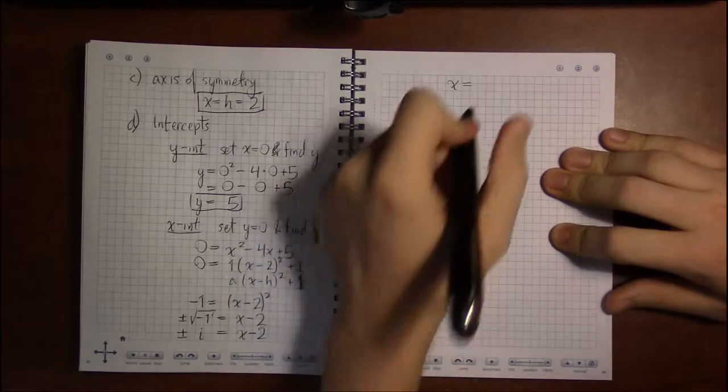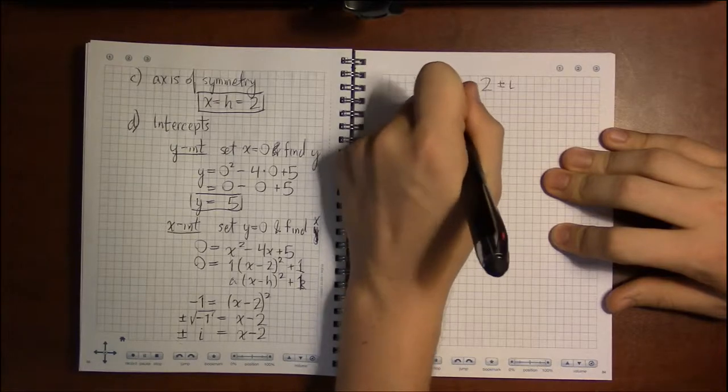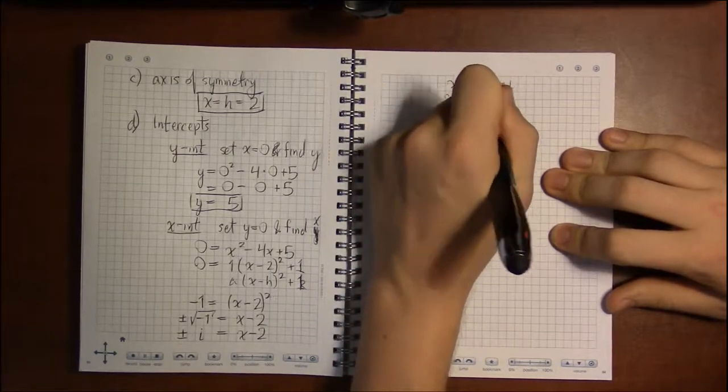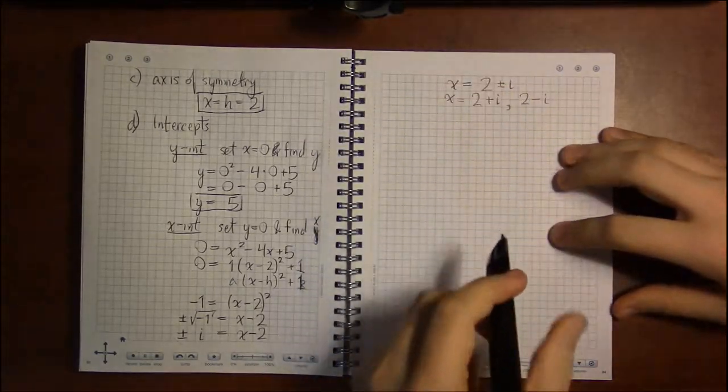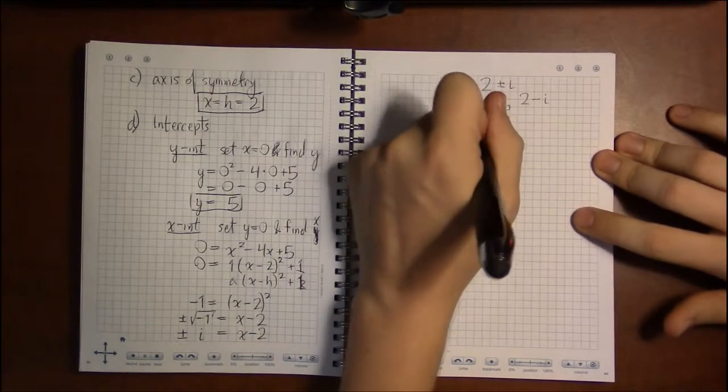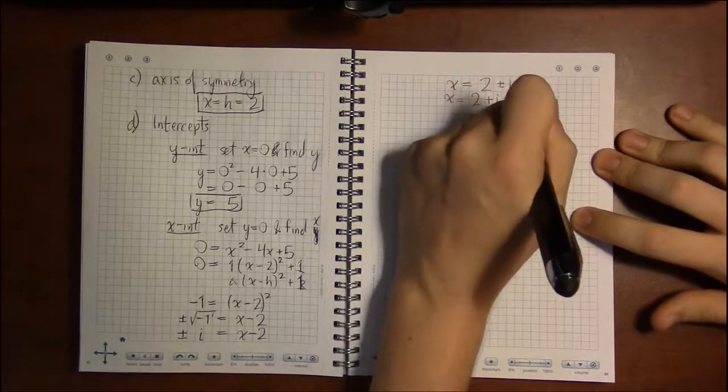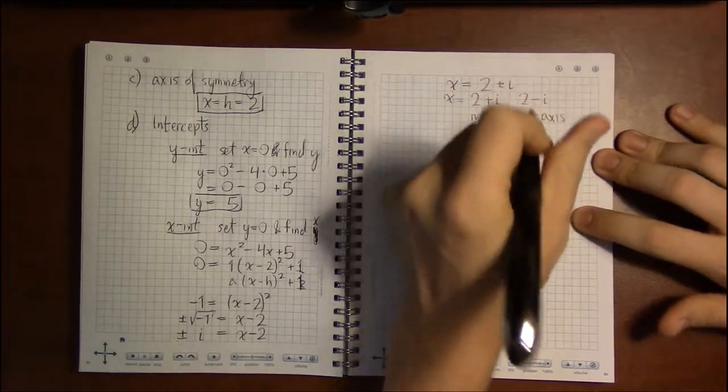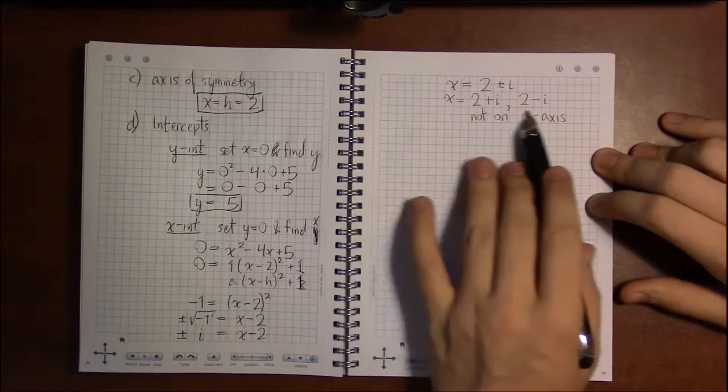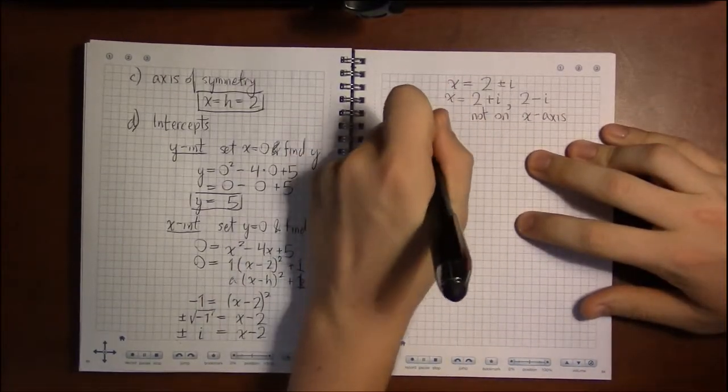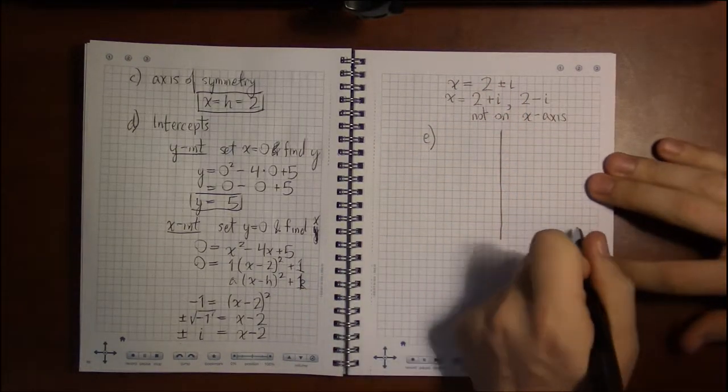So we're going to add 2 to both sides, and we have two x-intercepts: x equals 2 plus i and x equals 2 minus i. Now these are nowhere on the real axis. They're not on the x-axis; the x-axis only contains real numbers. So we won't be plotting these. In other words, our graph, our parabola for part e, is not going to cross the x-axis at all.